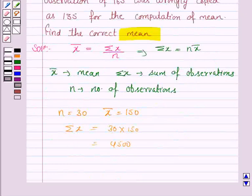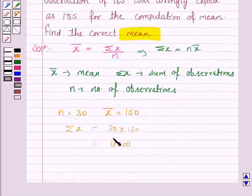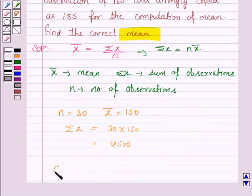Now we are given that one observation of 165 was wrongly copied as 135. That means we added 30 less in the sum of observations.